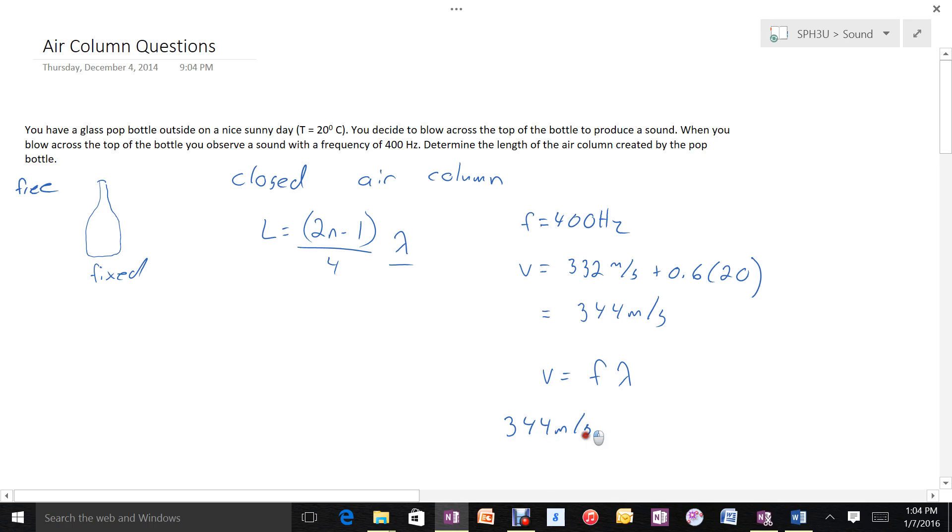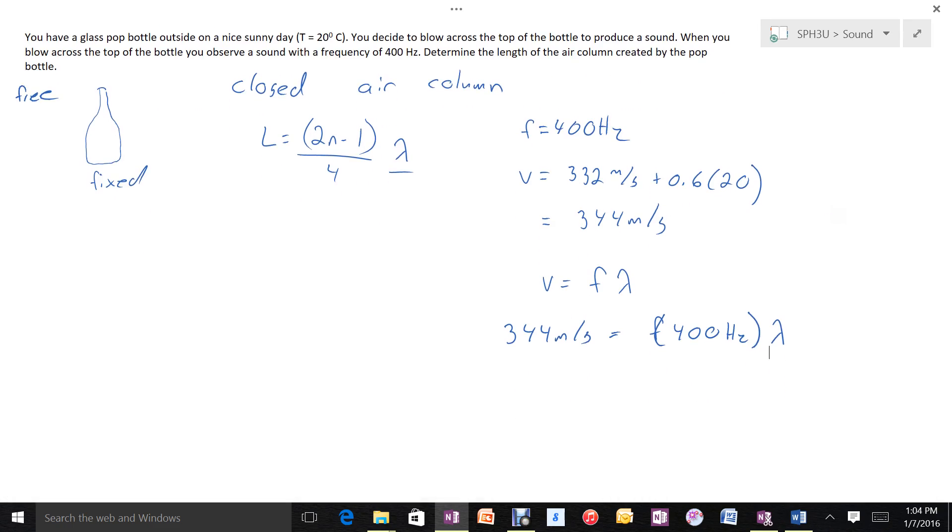We know that we have a frequency of 400 hertz. Since the temperature is 20 degrees outside, we can find the speed of sound, which works out to 344 meters per second.